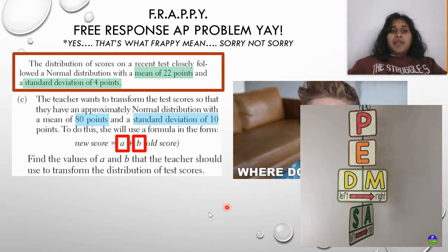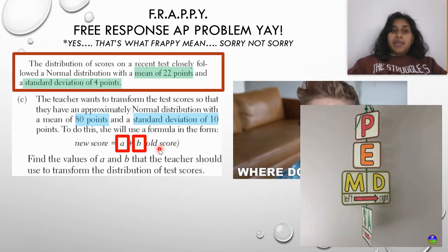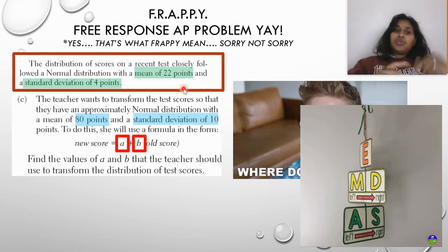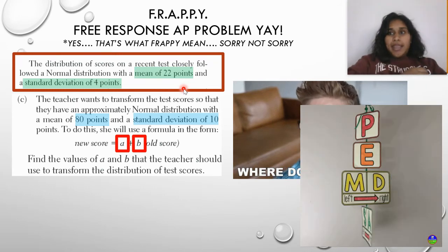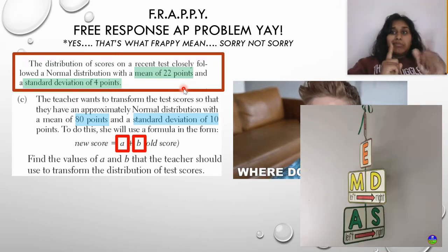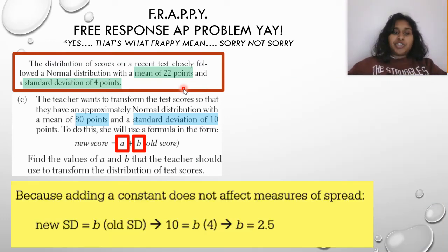If I plugged in my new score, 80 points, and I plugged in my old score, 22 points, looking at my two means and trying to get them there, what's the first thing that I would have to do? Well, I would have to first multiply before I added because that's how order of operations work. So let's solve the multiplication first before we solve the constant addition subtraction. So starting with the multiplication because adding a constant doesn't affect measures of spread. So all we're dealing right here is that standard deviation constant multiplication. So my new standard deviation is equal to B times the old standard deviation. So we're going to take 10 is equal to B times 4. So you can see where those values came from, and we simply end up with B is equal to 2.5. Cool.